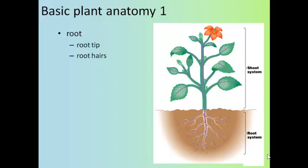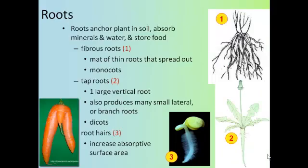The plant body can be divided into three organs: the roots, the shoots, and the leaves. The root's primary function is to anchor the plant in the soil and absorb the water and minerals from the soil that the plant needs to grow.